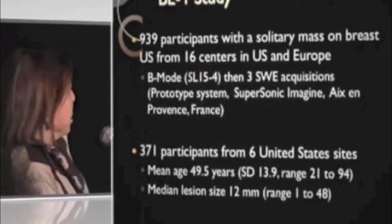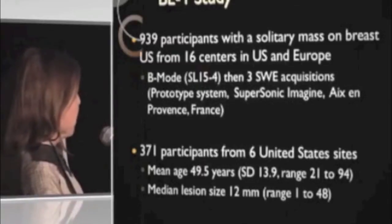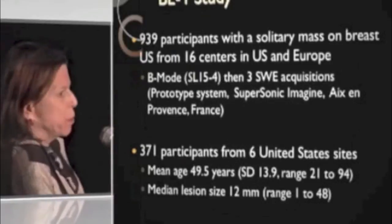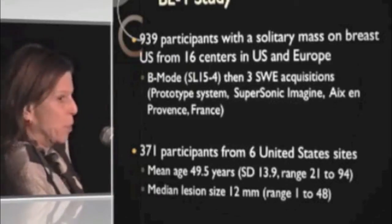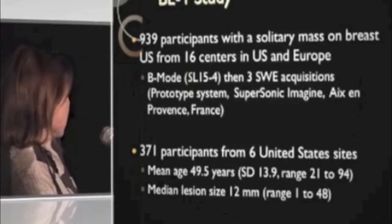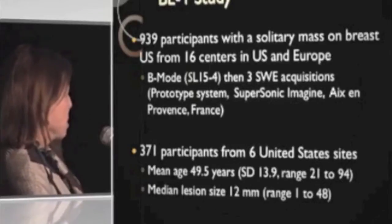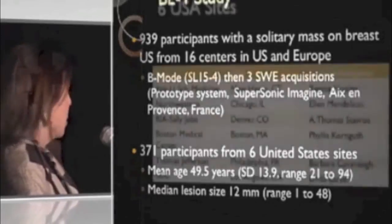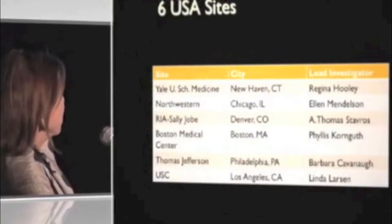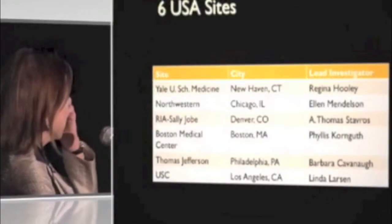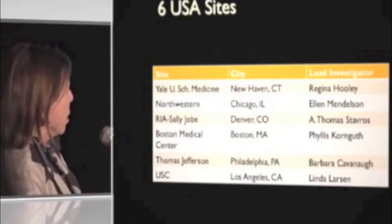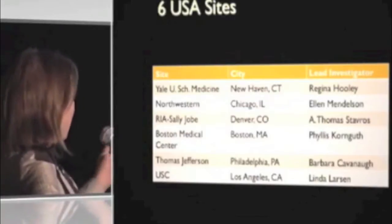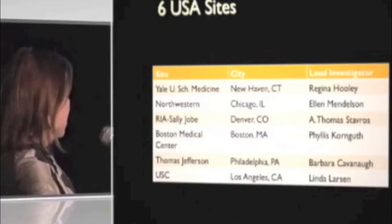The study that Dr. Cosgrove described with 939 participants overall — I'll focus on the U.S. We had 371 participants in the United States from six sites. The mean age was 49.5 years with a median lesion size of 12 millimeters. The sites are Yale, Northwestern, RIA, Sally Jobe (where Dr. Stavros was in Denver), Boston Medical Center, Thomas Jefferson, and USC.